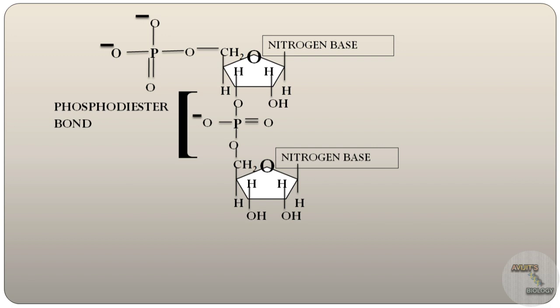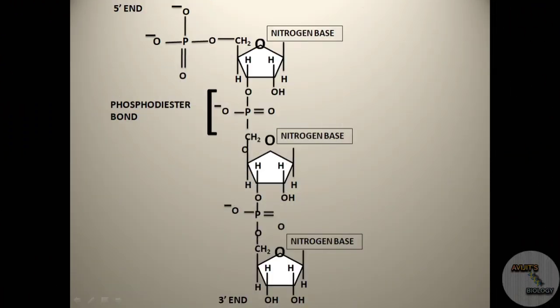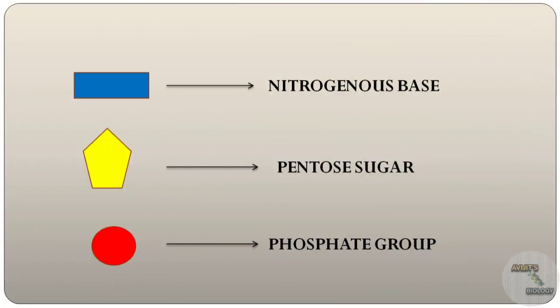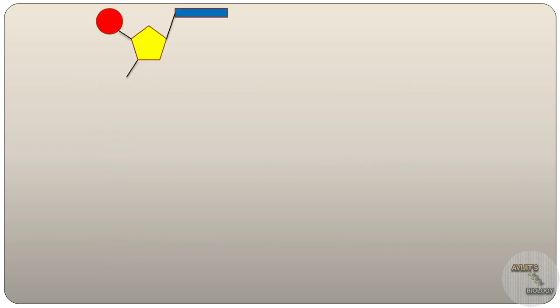This is how a complete strand of RNA is formed, and it will look like this. So now, if we consider the rectangle as nitrogenous base, the pentagon as pentose sugar, and this circle as phosphate group, then look at the animation carefully. This is how a strand of RNA is formed.